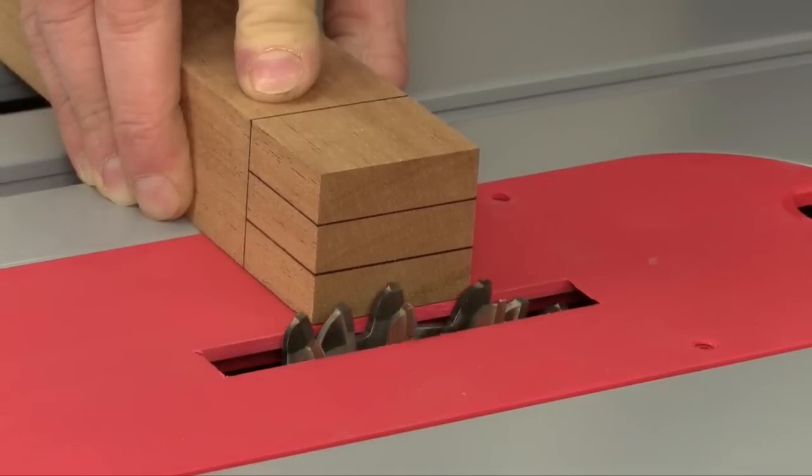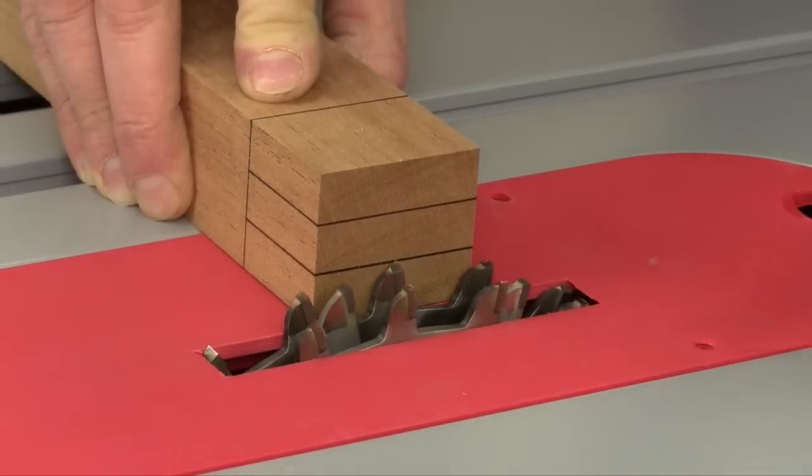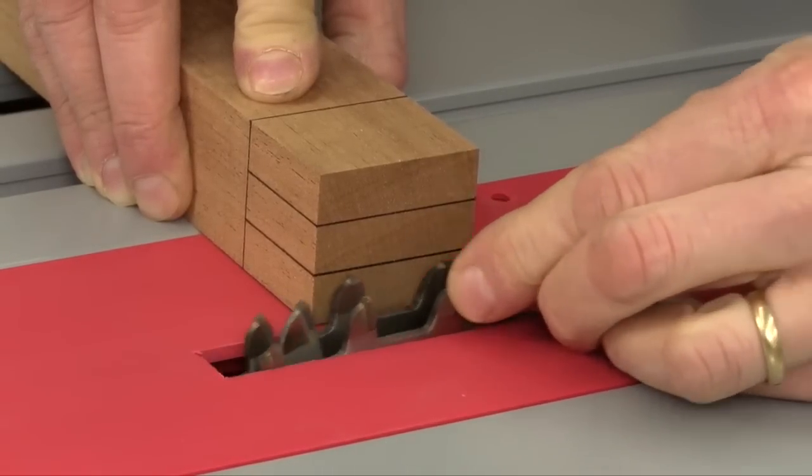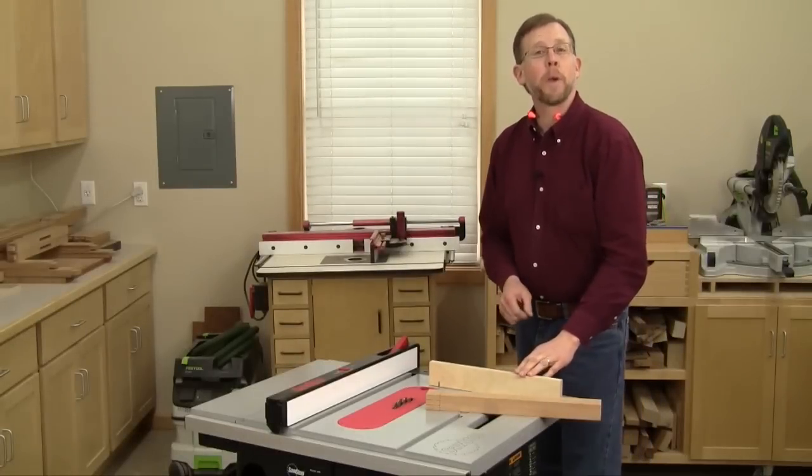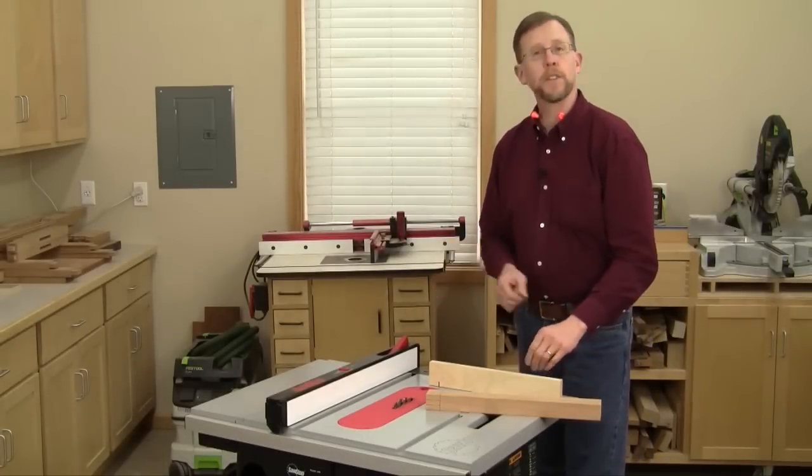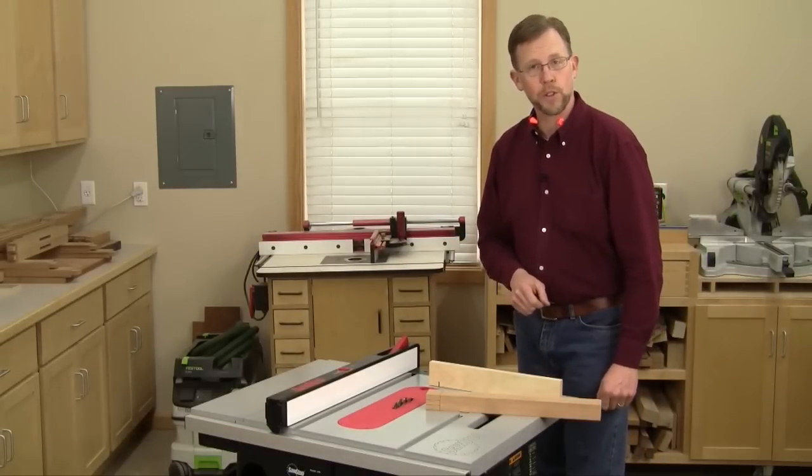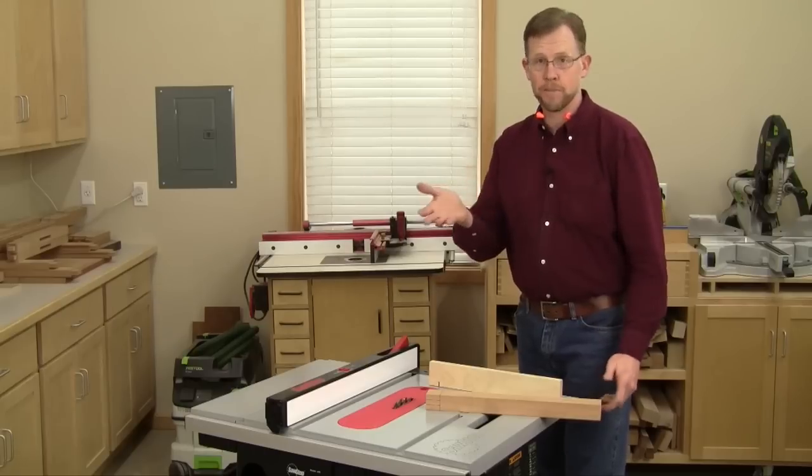Now raise the dado blade until the teeth intersect the cheek layout line of the tenon with the workpiece laying flat on the table. The dado blade is all set for making the cheek cuts, but you still have to set up the saw for cutting the shoulders because the cheek and shoulder cuts happen at the same time.